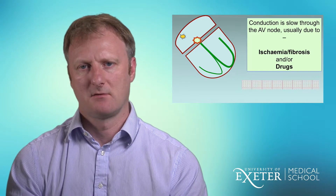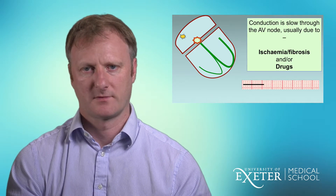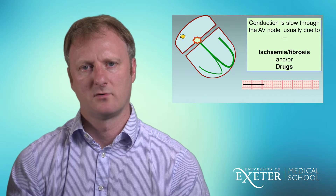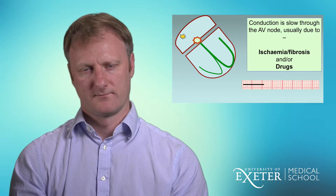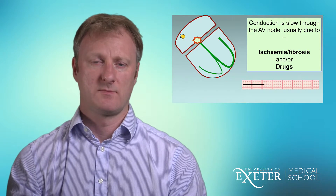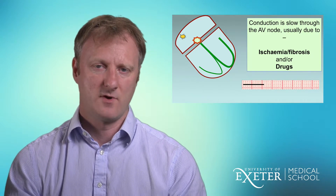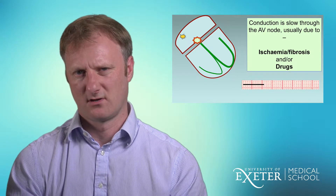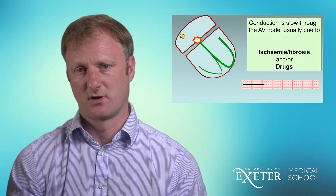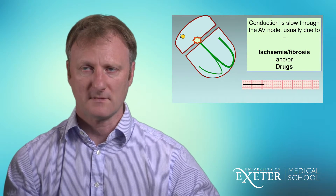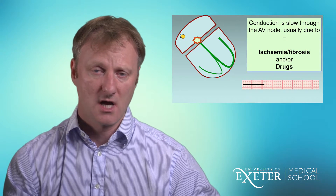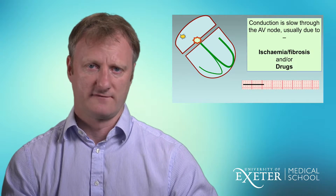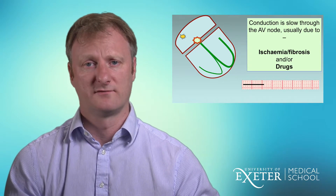A more common finding is a prolonged PR interval. The AV node is sluggish, which can be due to a combination of reasons: ischaemia and fibrosis that can come with age, drug therapy such as beta blockers or digoxin which is extremely common in hospitals, and in younger patients — particularly those who are very active or fit — vagal influences can cause the PR interval to prolong.